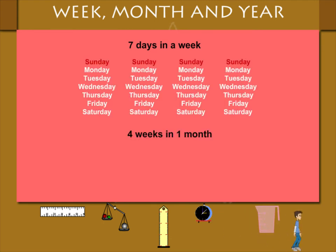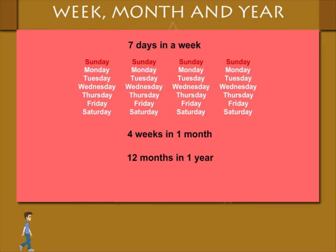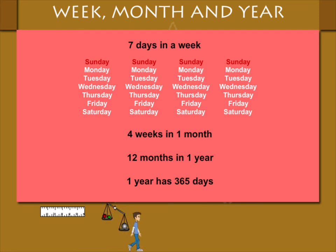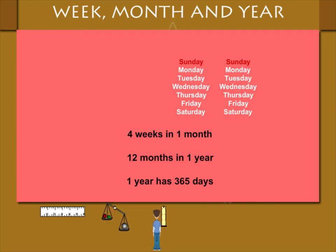There are 4 weeks in a month and 12 months in a year. One year has 365 days. Let's see how these days are distributed in a year.